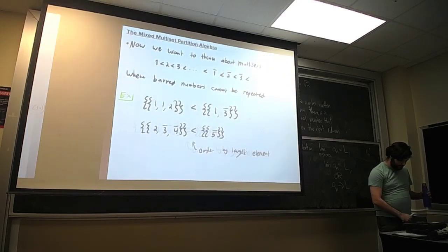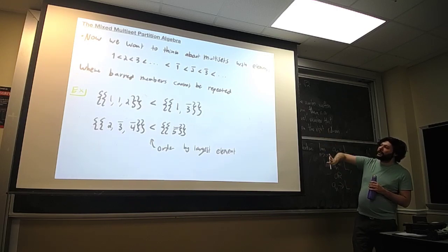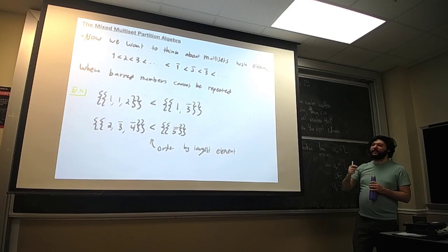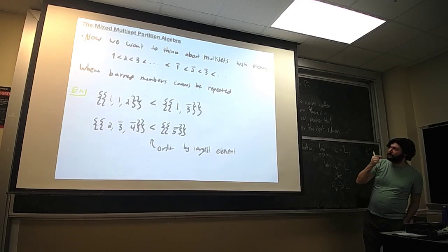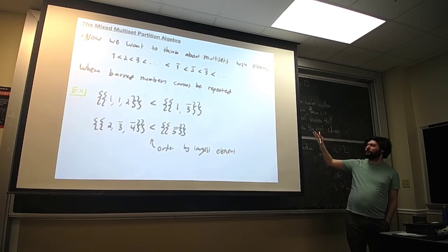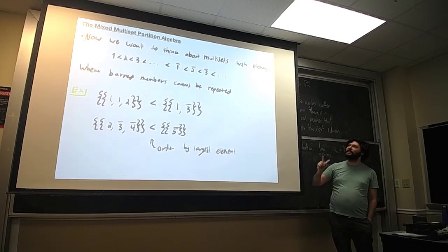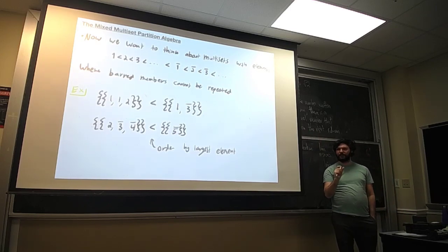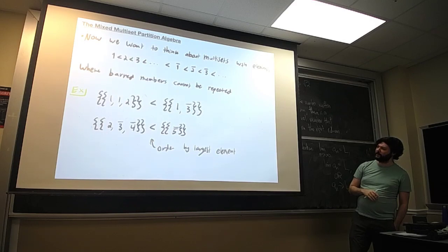Looking at it from this perspective gives immediate consequences. One is that the centralizer algebra we're after is just the partition algebra conjugated by these idempotents. And all the original representations of the centralizer algebra we're after are just projections of the original representations of the partition algebra by this idempotent. In order to turn this into combinatorics, we need to start thinking about multisets. Now that we're symmetrizing, we have indistinguishable elements. We actually want multisets on two different alphabets: numbers 1, 2, 3, … and barred numbers 1̄, 2̄, 3̄, …